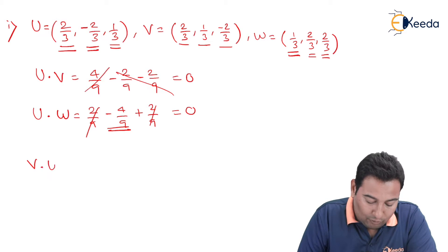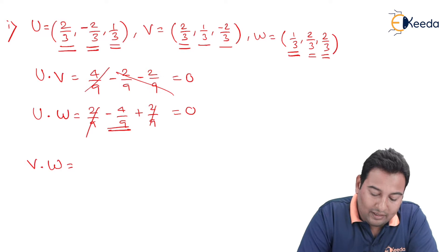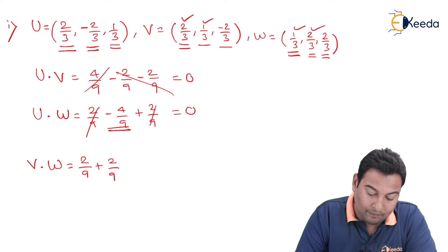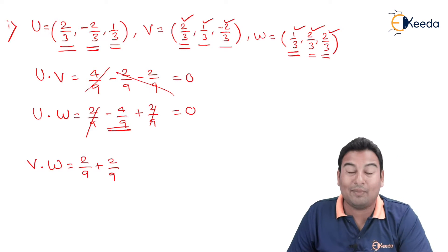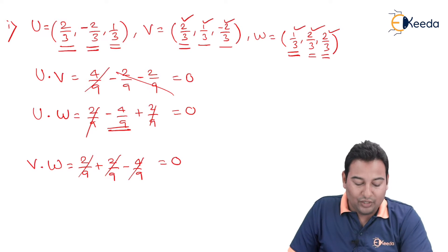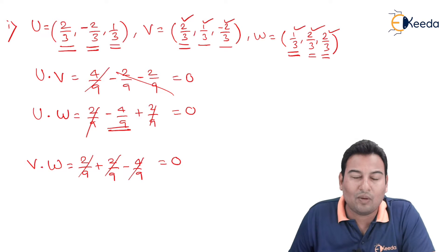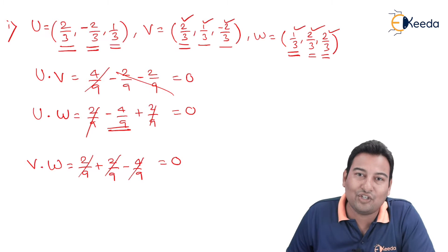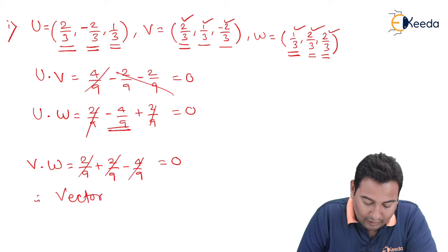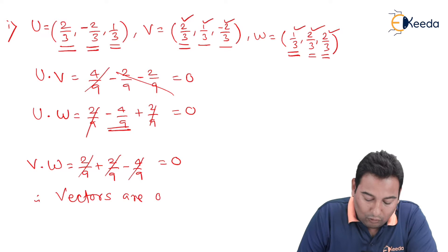Now we are going to check v dot w. 2/3 times 1/3 is 2/9; 1/3 times 2/3 is again 2/9; and minus 2/3 times 2/3 is −4/9. These cancel and you get 0. So u dot v, u dot w, and v dot w are all 0 — the first condition is satisfied. Therefore, the vectors are orthogonal.